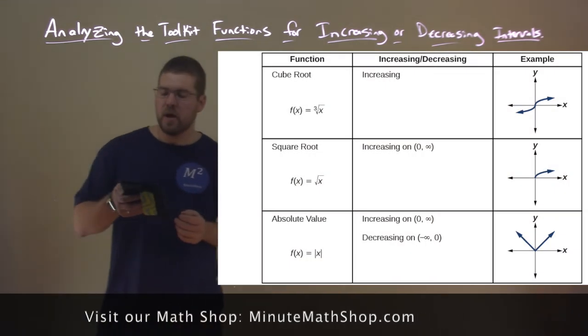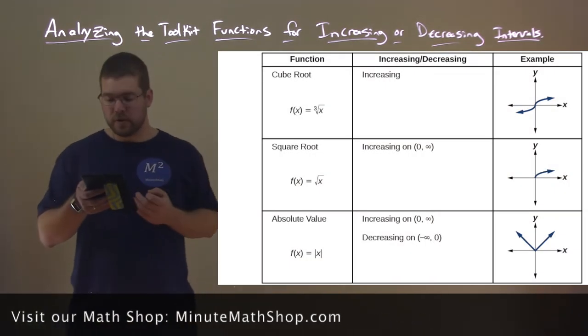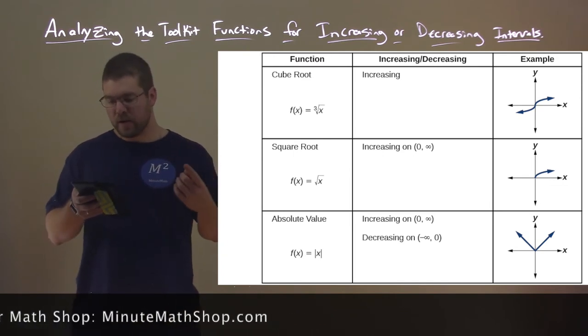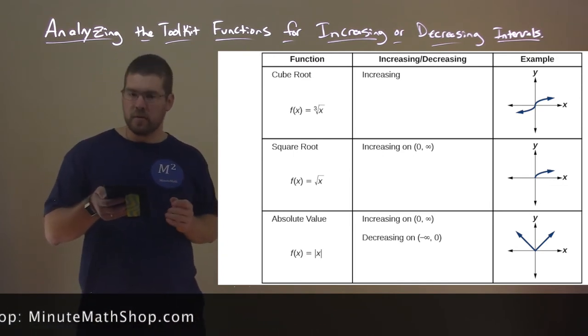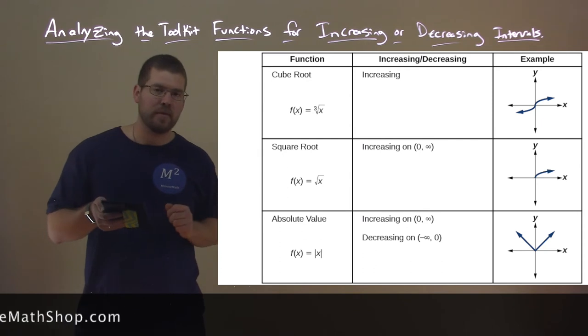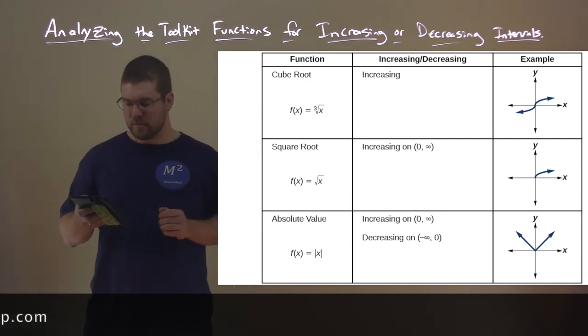Our last set of examples here, this is the cube root function first. f(x) equals the third root of x. That function is always increasing. And we can see that graph right there. So it's always increasing from left to right.